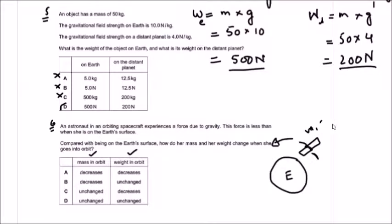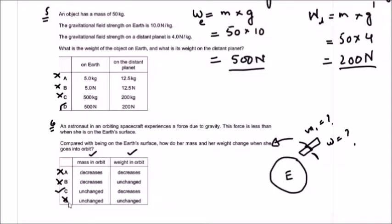Mass does not change from place to place, so mass cannot decrease or increase — options A and B are incorrect. Option C: mass in orbit is unchanged — correct. Weight in orbit decreases — correct, because in orbit the astronaut experiences lower gravity, meaning lower gravitational field strength, so weight decreases. Option D says weight is unchanged, which is not correct. So option C is the correct answer.